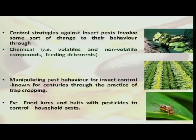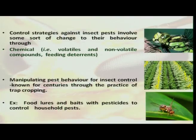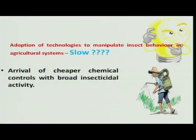This was involved in the pest management strategy through trap cropping systems. Another way of modifying insect behavior is through food lures and baits used in pest management programs, both in household pest management and for field insects. However, even though we have a long history of adoption of this technology, its adoption in agriculture systems is slow.